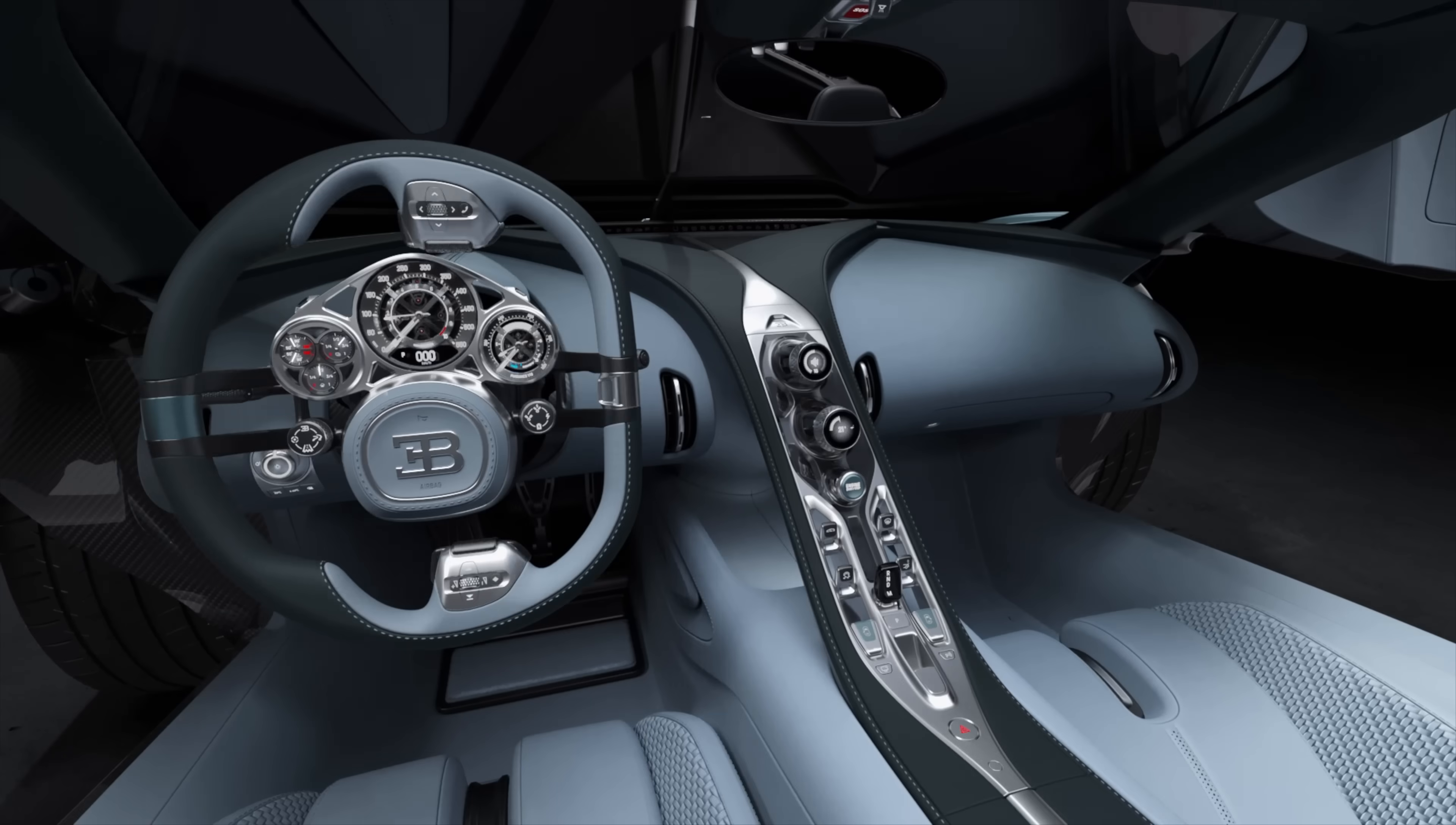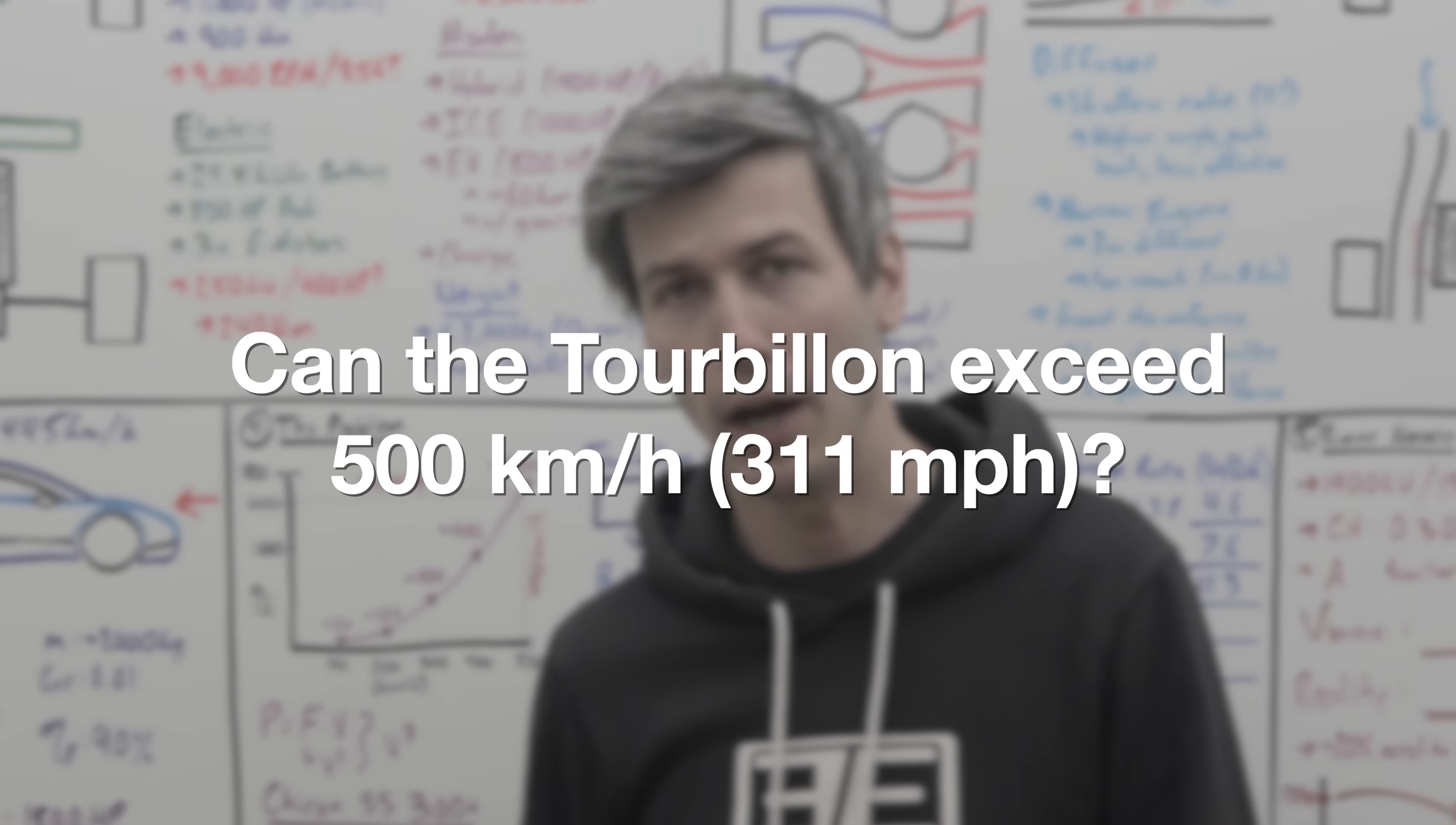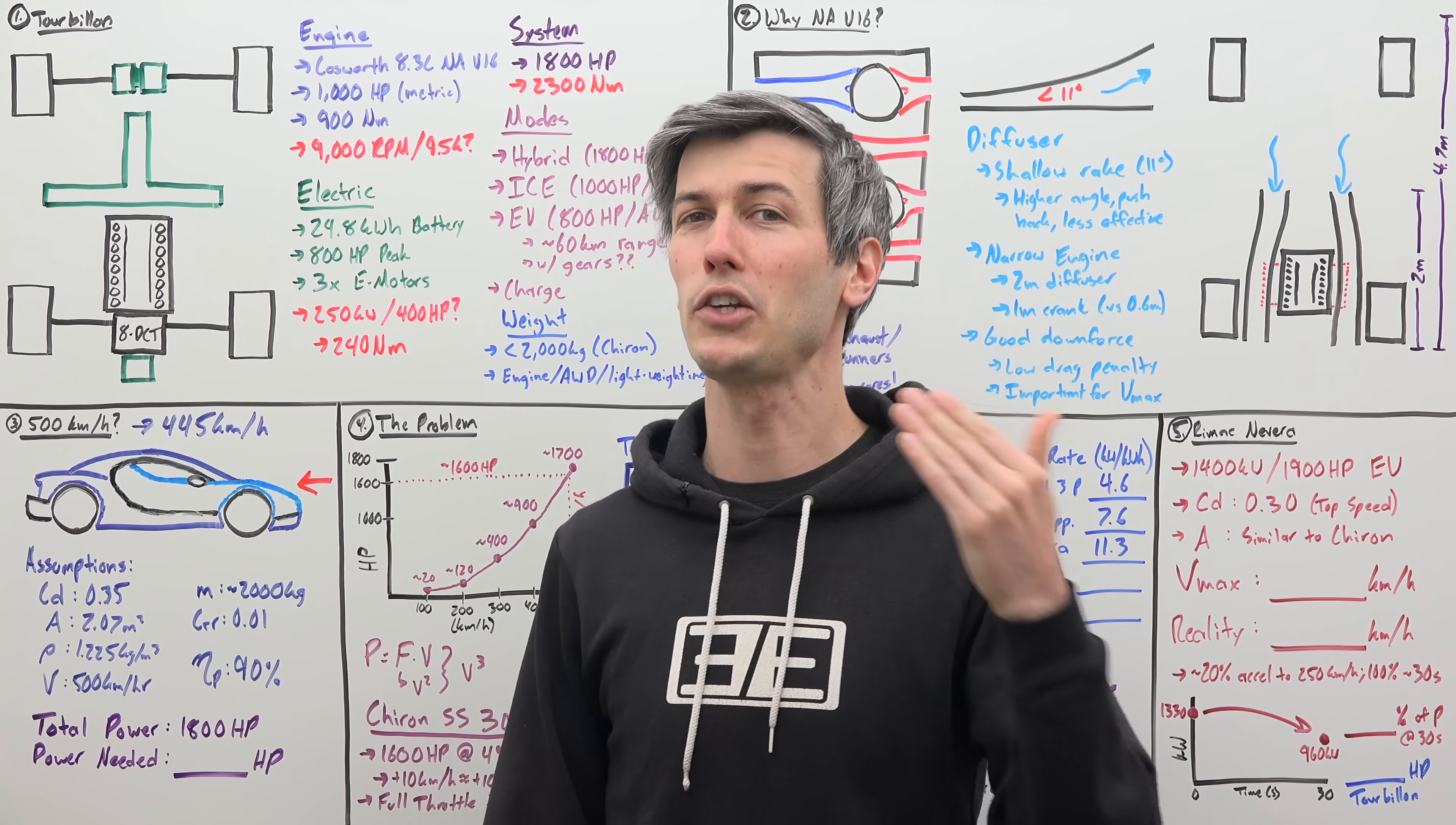Now, admittedly, Bugatti hasn't released all the specs on this car. So we're going to have to make some assumptions. But there's a lot of available information about the Chiron, so we're able to make relatively accurate guesses. So the question is, can the Tourbillon exceed 500 kilometers per hour? And we can figure out how much power is needed to do that by looking at all of the resisted forces acting against it at 500 kilometers per hour.